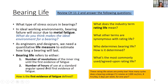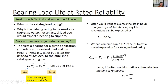If you think about it, these are both just number of revolutions. Read a little bit in the text to learn how the first evidence of fatigue is defined — because once a bearing has gone past its life, there's some evidence of fatigue but the bearing is still usable. What does the industry term rating life mean? What other terms are synonymous with rating life? Who determines bearing life and how is it determined? What's the most commonly used agreed-upon rating life? And what is the catalog load rating, and why is it used as a reference value, not an actual load you would expect a bearing to support?